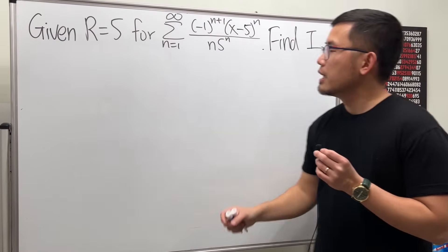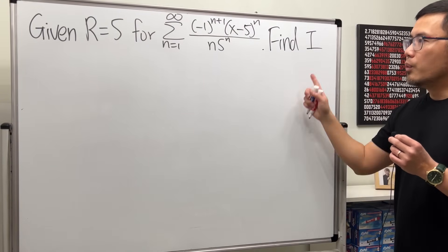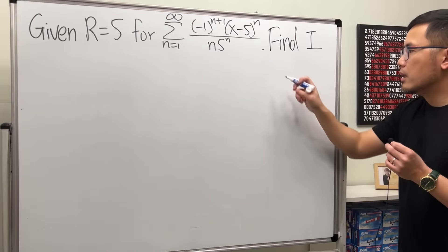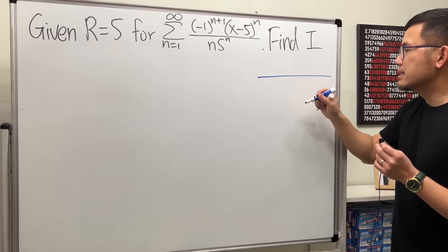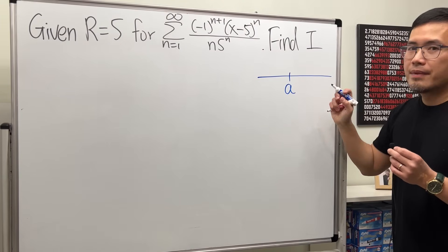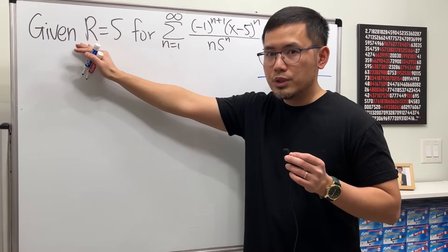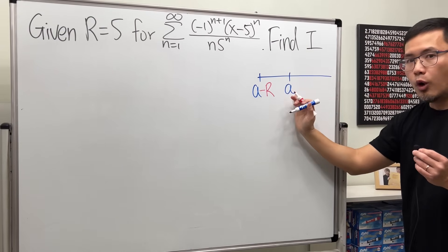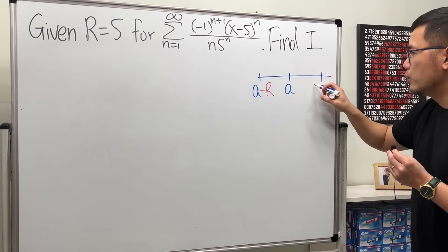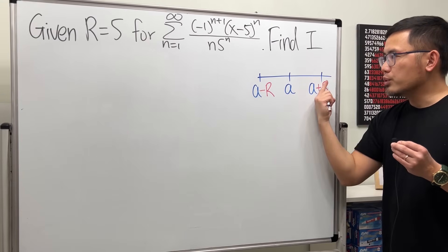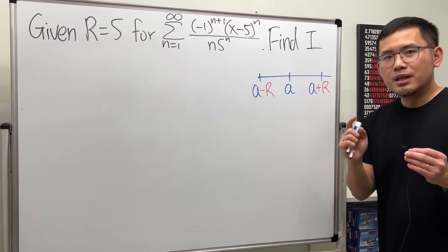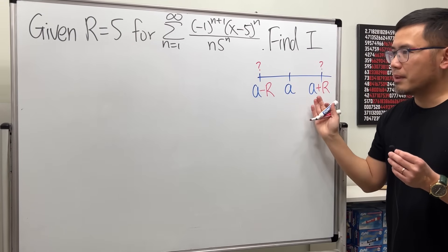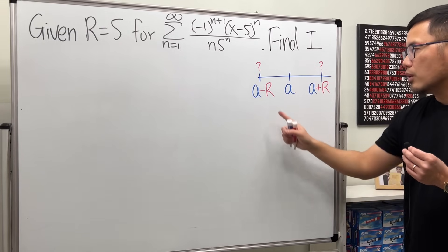Capital R is the radius of convergence and capital I is the interval of convergence. In order to find I, we need to know R first and also the center. Here's the idea: we have a number line with center 'a'. From the center, go left R times to get a minus R, and right R times to get a plus R. We also have to test convergence at the endpoints — I'll put question marks there for now. So R equals 5.